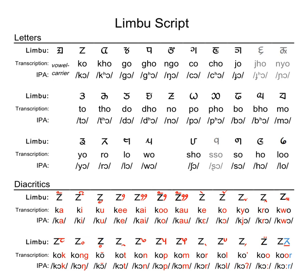Long vowels without a following final consonant are written with a diacritic called Kempfring. There are two methods for writing long vowels with syllable-final consonants: use the Kempfring diacritic and the final consonant mark, or replace the final consonant with the corresponding full consonant and add an underscore-like diacritic mark, indicating that the consonant is final and that the preceding vowel is lengthened. This same diacritic may be used to mark final consonants in loanwords that do not have final forms in Limba, regardless of the length of the vowel.